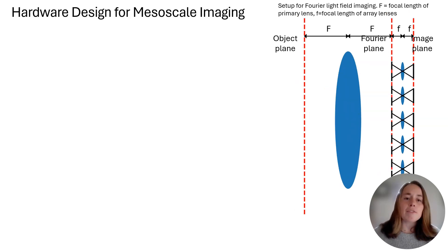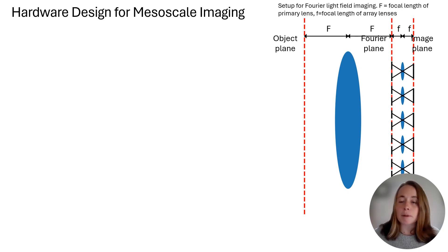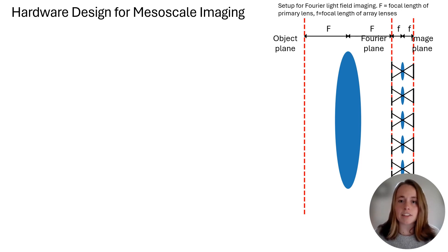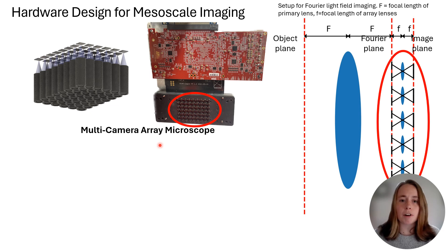To apply Fourier light field imaging to mesoscale imaging, we need to carefully design the optical hardware, especially our choices for the array and primary lenses. First, we need to choose array lenses and sensors that can acquire high resolution images at high speed. To accomplish that, we use the multi-camera array microscope, or MCAM, which is a technology previously developed in the Horst-Meier lab.